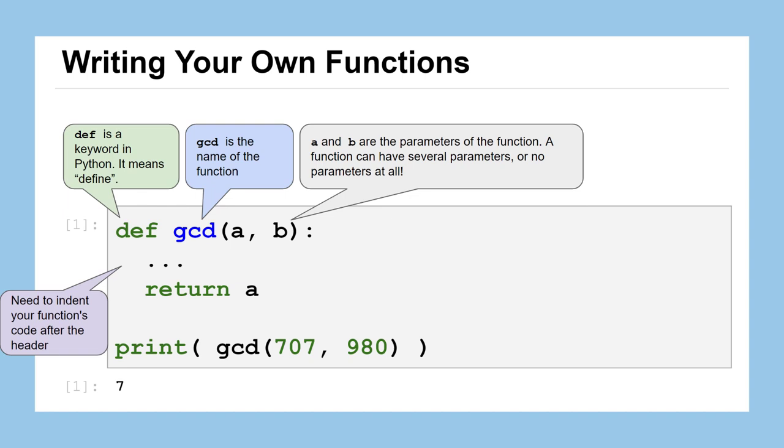You need to indent all of the code that will get run when your function is called. So just like most other things after an if statement, after a while statement, when you put that colon at the end of the definition line, usually your notebook environment will indent the next line for you. But just in case, you've got to put those spaces or tabs in there to indent it.